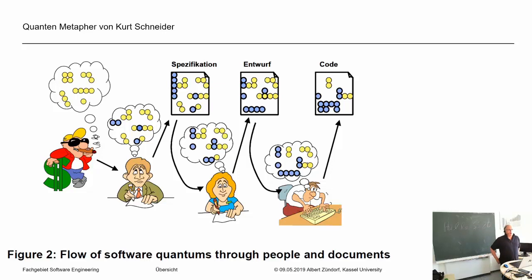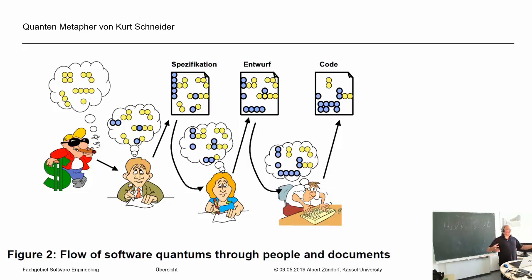Es gibt ähnliche Probleme bei großen Firmen, wenn die eine SAP-Einführung machen. Das ist auch immer so ein Big Bang, der immer furchtbar crasht und das funktioniert einfach nicht gut. Die SAP-Leute neigen dazu, so ein All-in-One-Ding zu machen: du hast bisher so gearbeitet und jetzt machst du alles mit SAP, den kompletten Laden — also ganz Volkswagen — und die arbeiten sehr schlecht mit anderen Teilsystemen zusammen. Die Lösung für solche großen Softwareprojekte ist agiles Vorgehen, in solchen Release-Iterationen und Sprints.